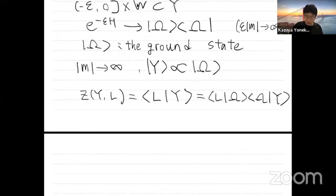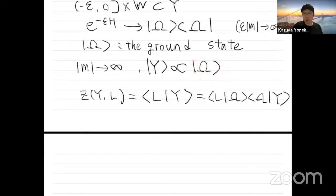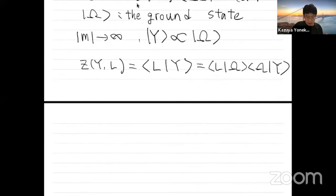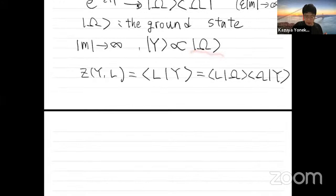So we can separate the boundary contribution and the bulk contribution. But this separation is not complete because we needed to introduce the ground state, and the phase of the ground state is not canonically determined — this ground state has a phase ambiguity. In particular, this system has a Berry phase, so there is no canonical way to determine the phase of the ground state. Up to the phase ambiguity, we can separate the boundary and bulk contributions.